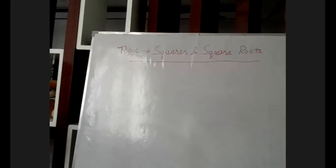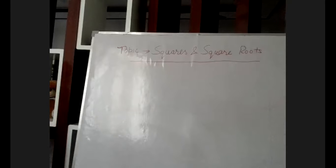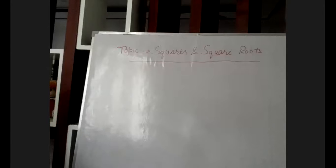A square is the product of a number by itself. Square of a number is the product of the number by itself. When we multiply two numbers, for example 11 into 11, then we get 11 squared. So this is the square of 11.